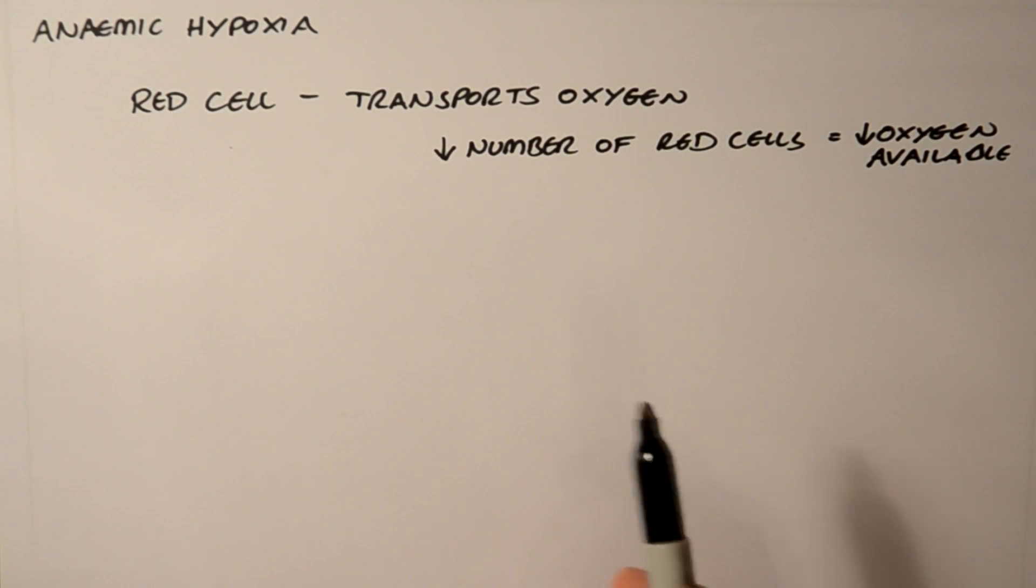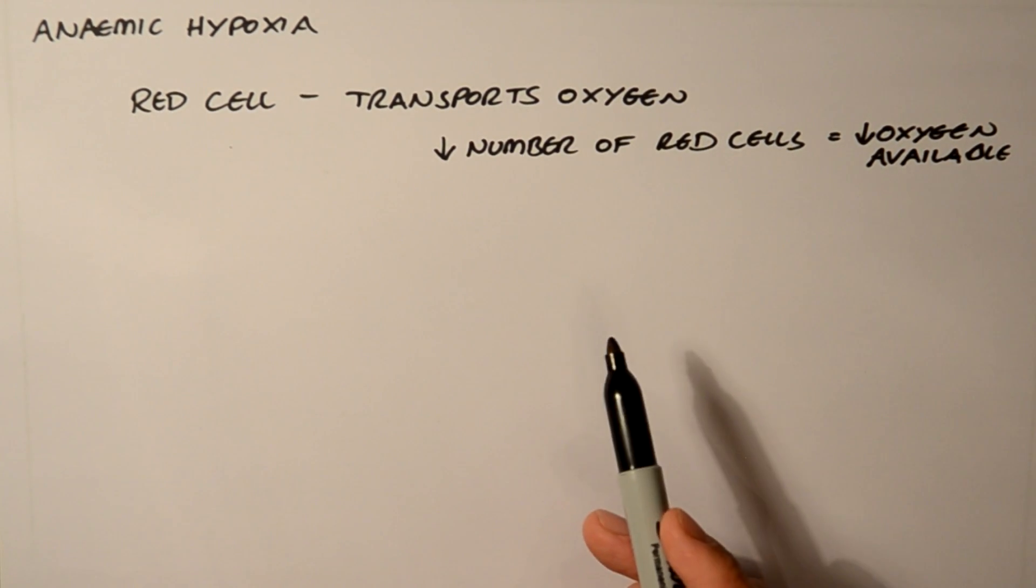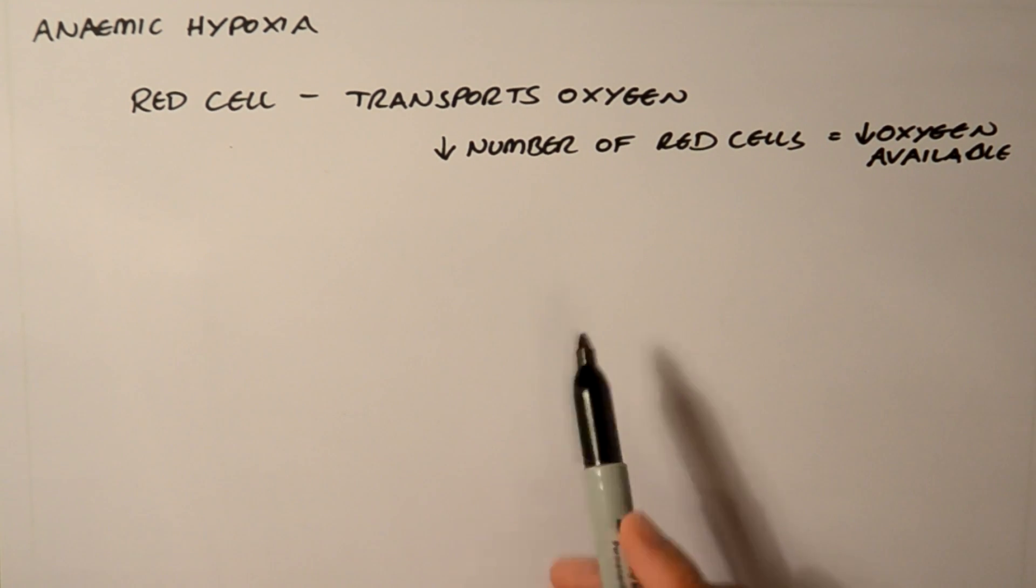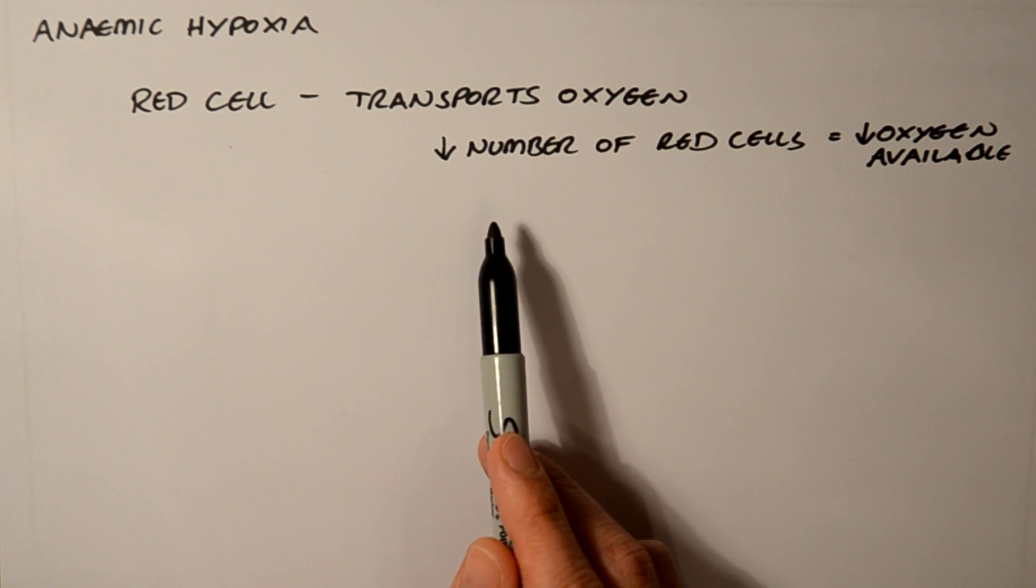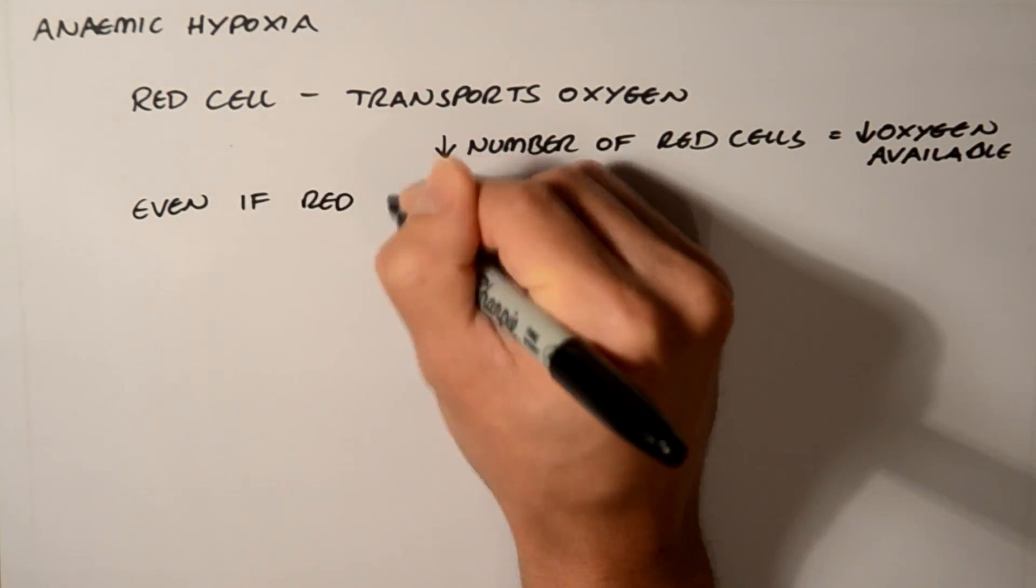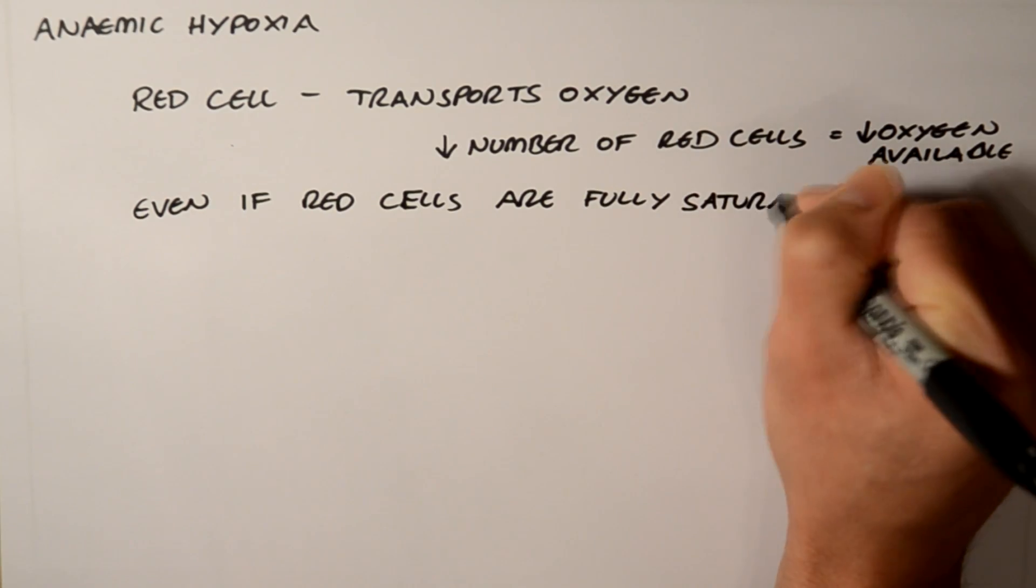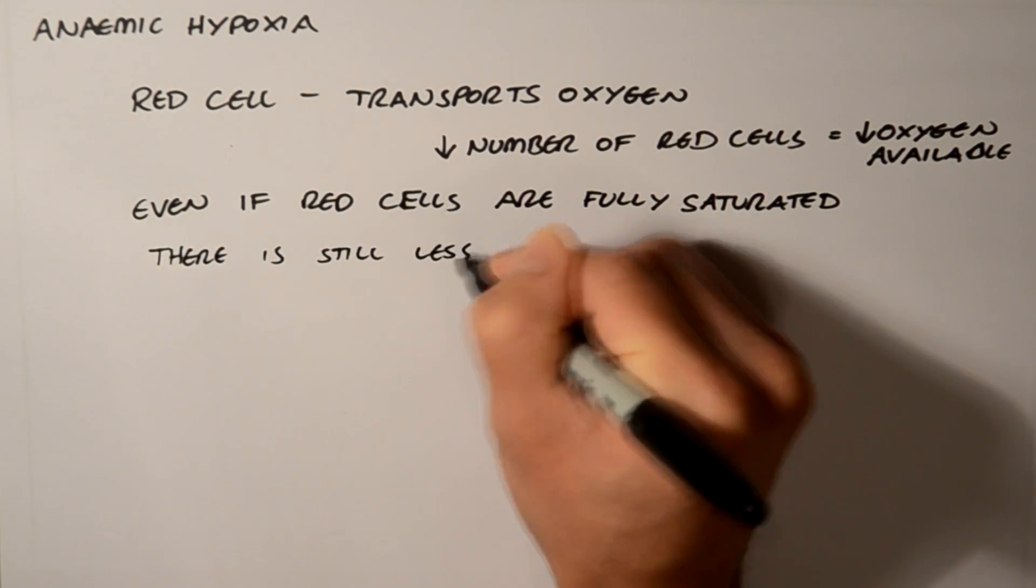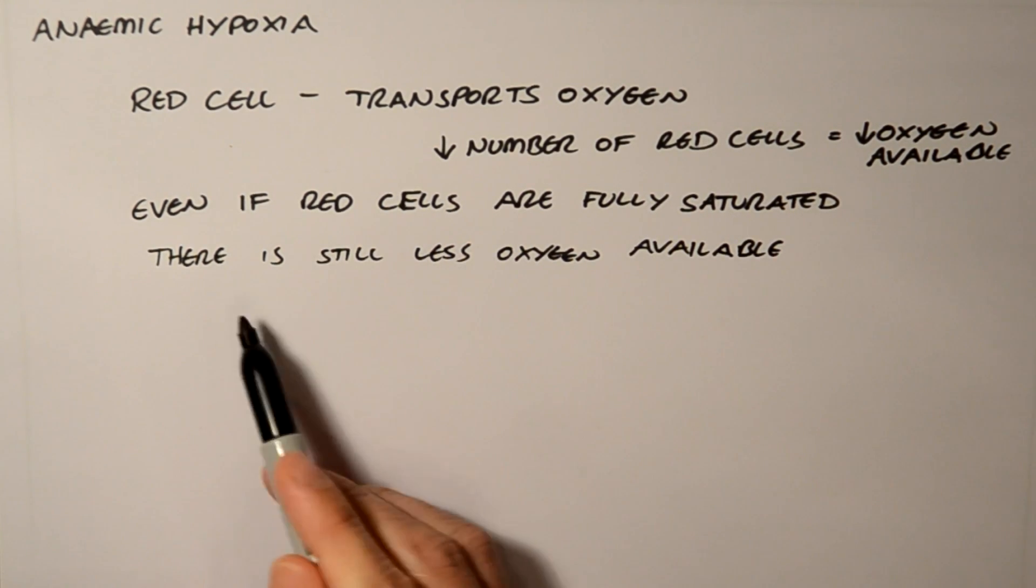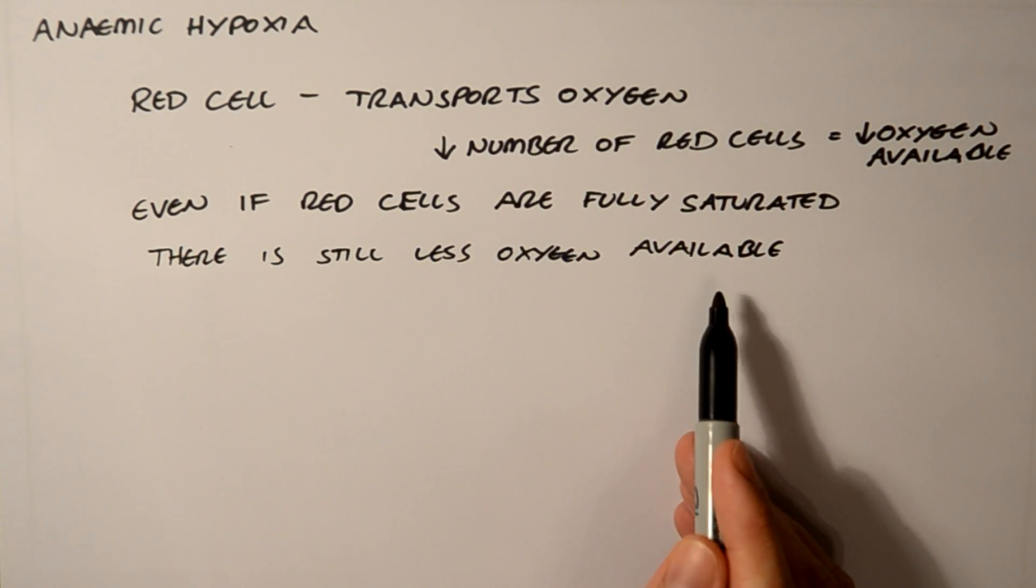This can first manifest when trying to exercise, for example, if the anemia is quite mild, or in more severe cases, this can happen at rest. Remember that even if red cells are fully saturated, there is still less oxygen available.